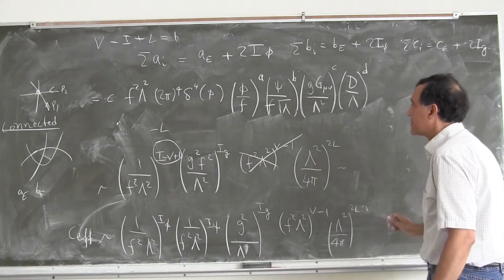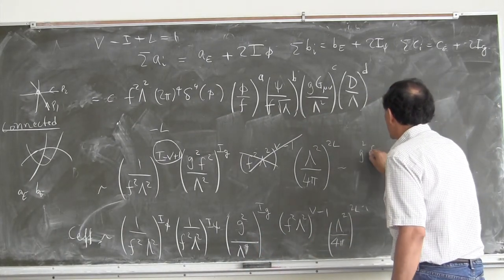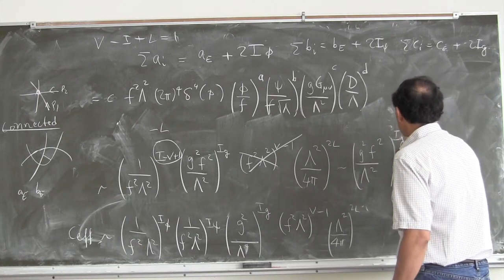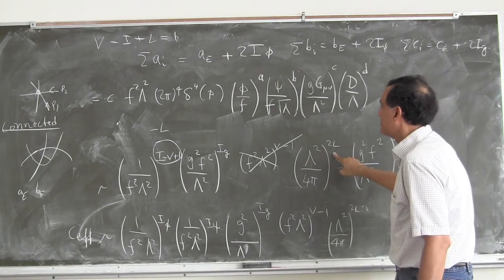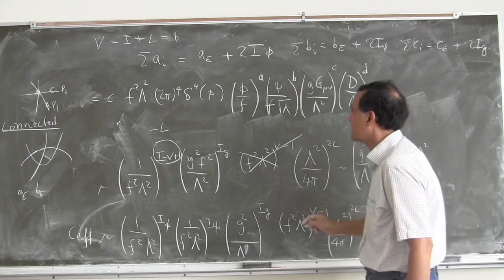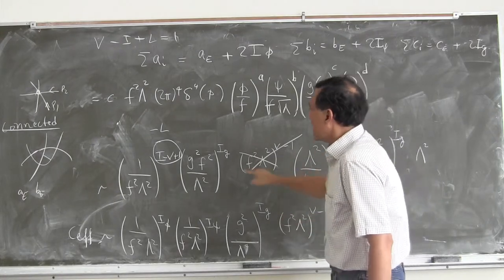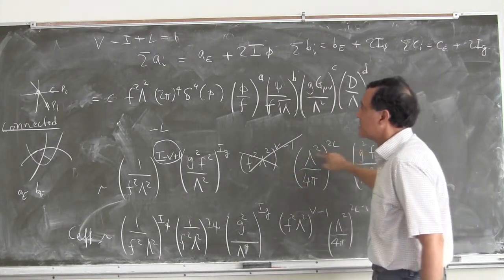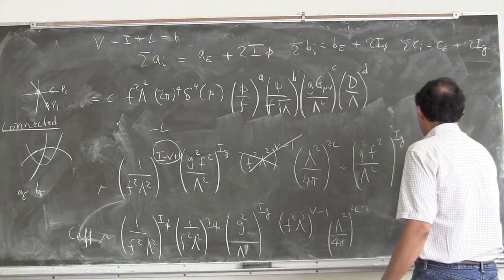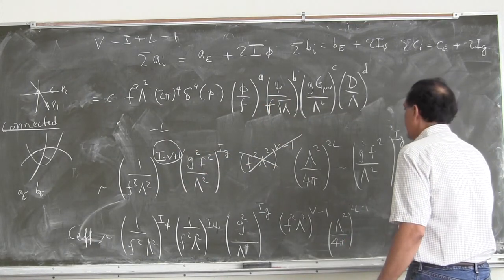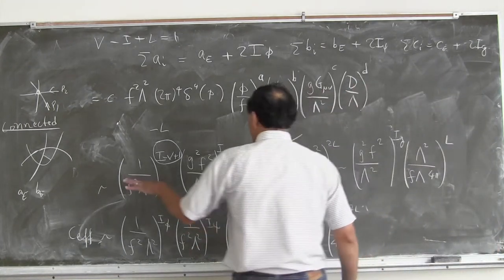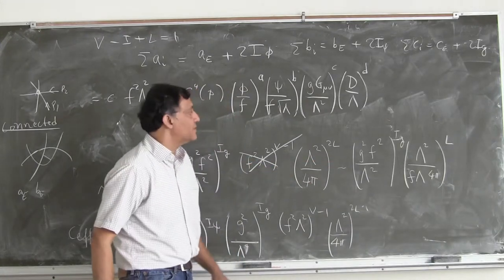Summarizing: you get g²f²/lambda² to the I_g, then lambda², and the 1/(f²lambda²)^{-L} combined with the loop factors gives 1/(f·lambda·4π) to the number of loops. That's the final result for the power counting formula.